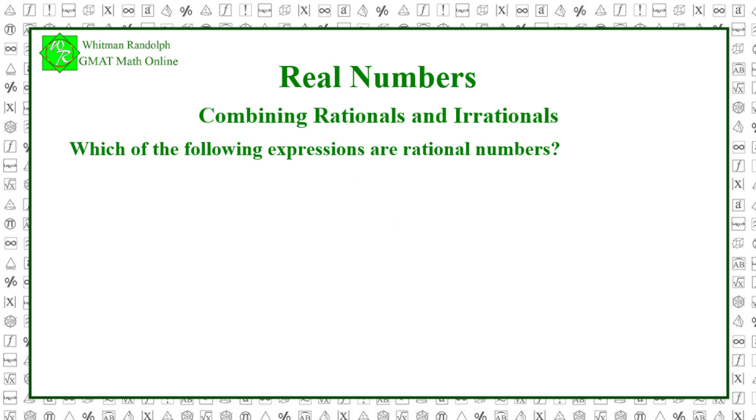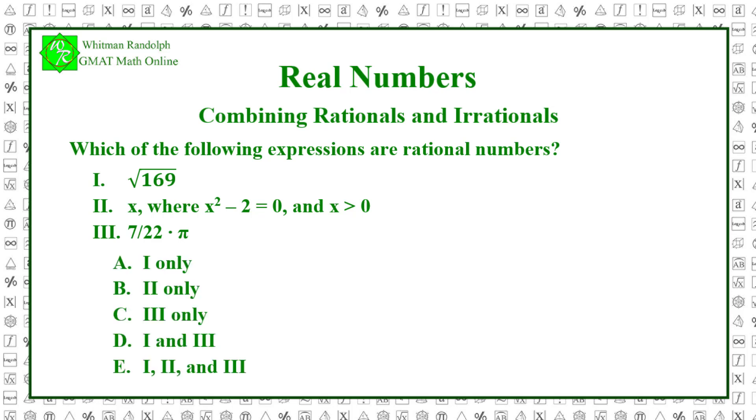Problem: Which of the following expressions are rational numbers? The square root of 169. X, where x squared minus 2 equals 0 and x is greater than 0. 7/22 times pi. And here are some possible answers. Let's find the solution. The square root of 169 equals 13, which is rational. So, choice 1 is a rational number.